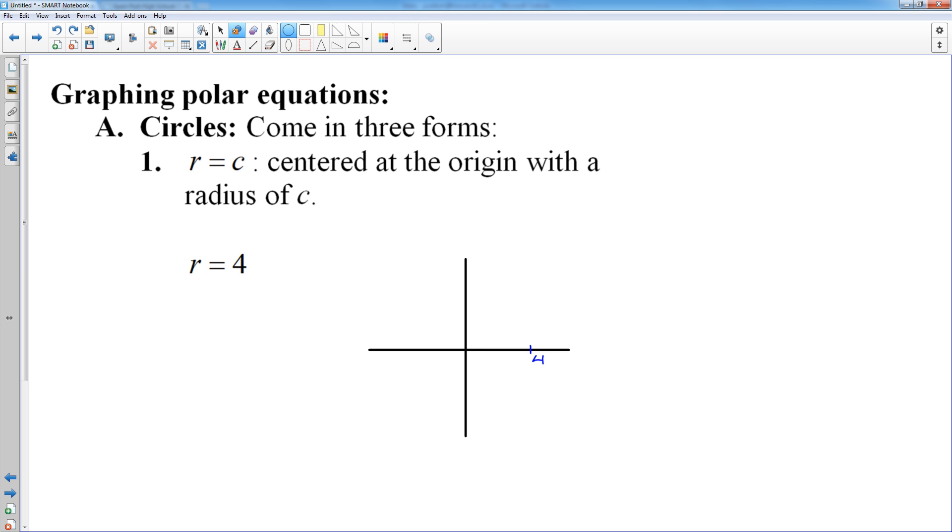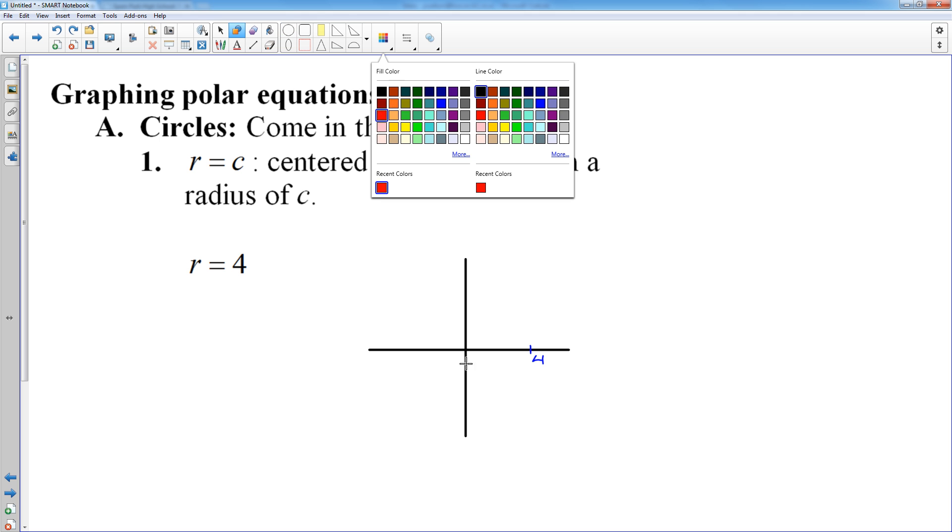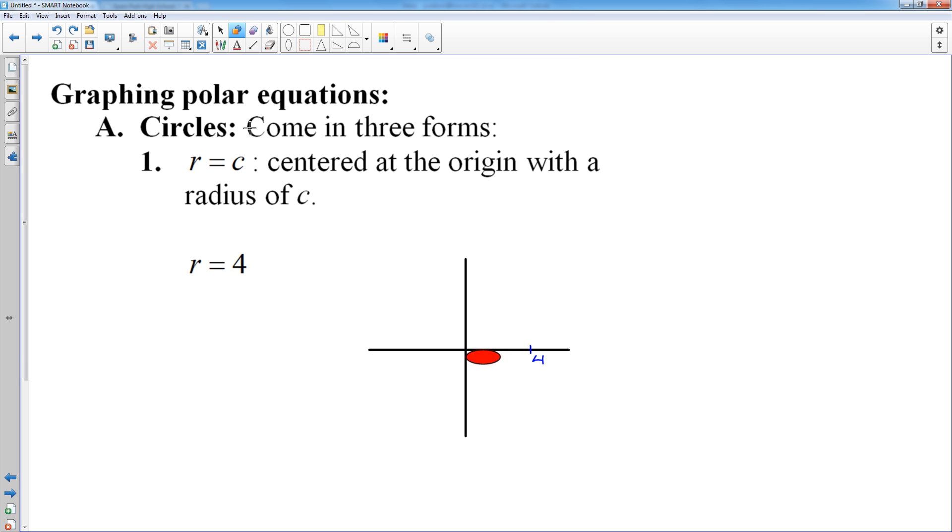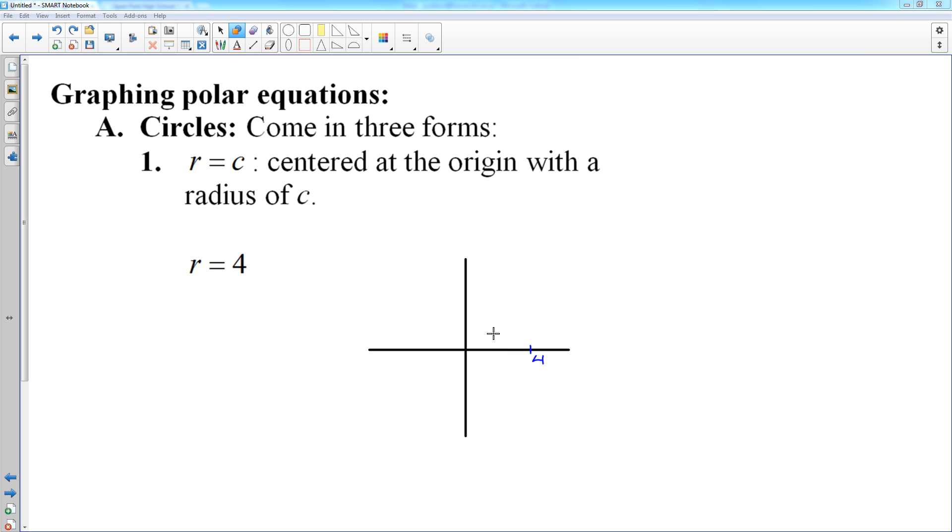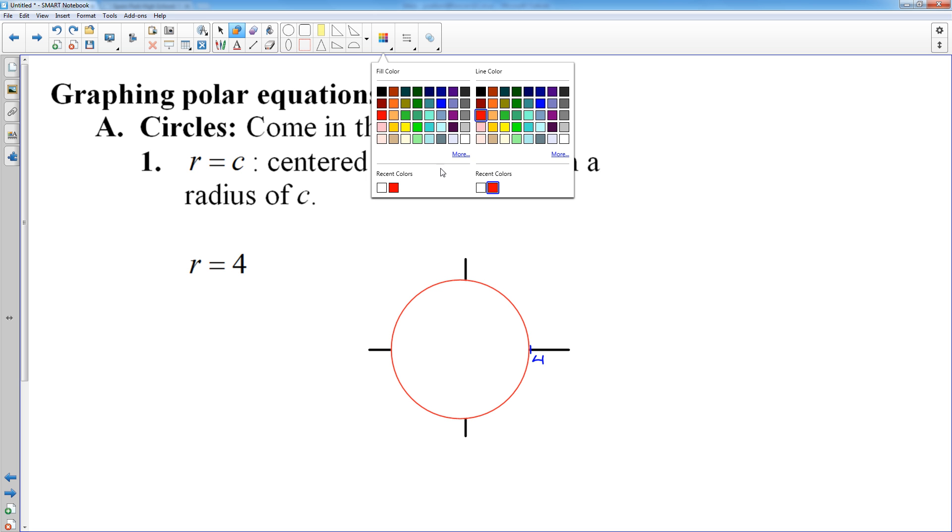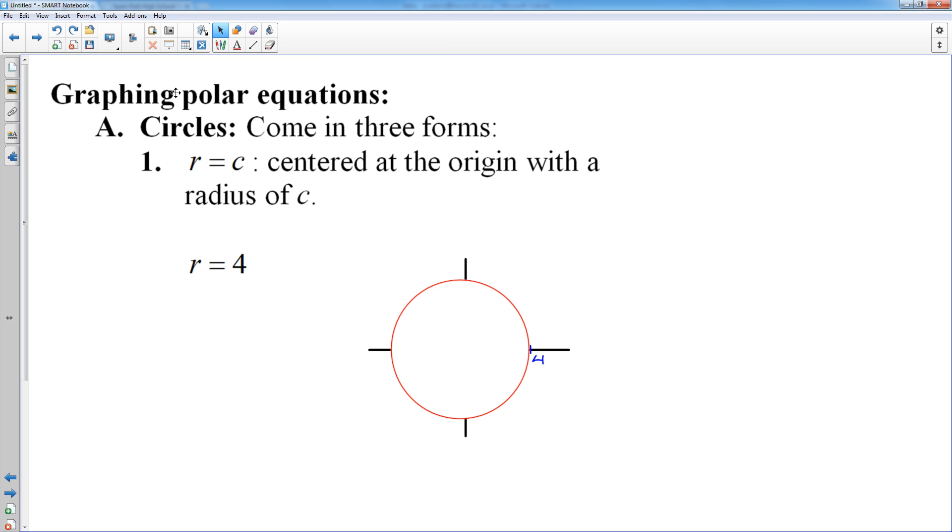So if r equals four, that means we're just going to draw a circle with radius four starting at the origin. So it's a circle centered at the origin with a radius of four. That one's pretty simple.